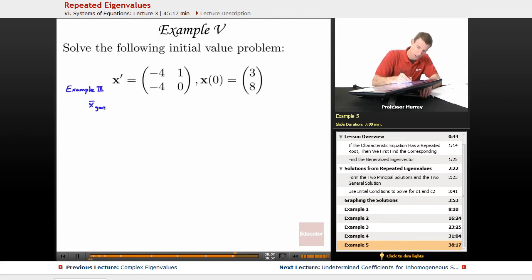x general was c1 times e to the negative 2t times the vector (1, 2), plus c2 times the quantity t e to the negative 2t times (1, 2), plus e to the negative 2t times (0, 1).